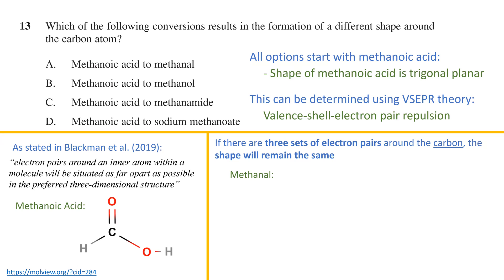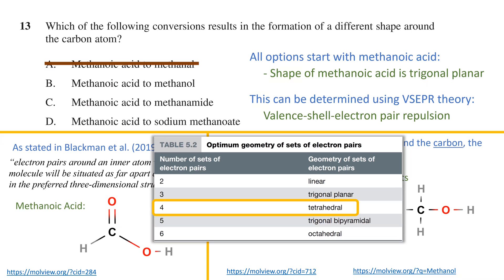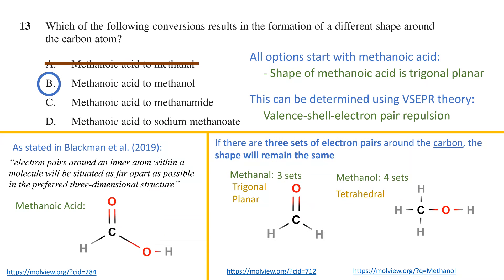Starting with option A, the conversion to the aldehyde methanal: the structural formula is very similar and we still have three sets of electron pairs around the carbon atom. Therefore the shape remains trigonal planar, eliminating option A. In option B, the conversion to the alcohol methanol, the structural formula shows we no longer have three sets of electron pairs around the carbon — instead we have four sets. This means a tetrahedral shape, so option B is the answer.